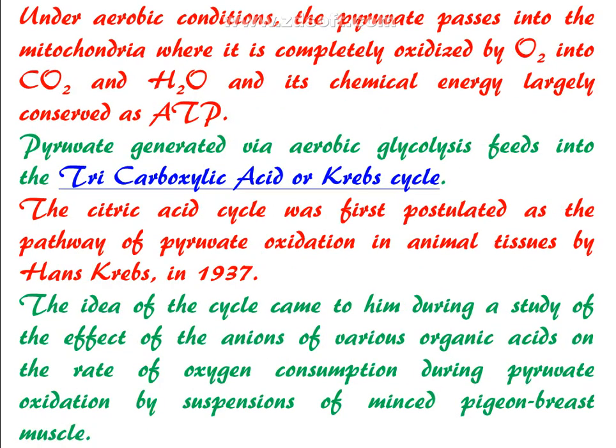In aerobic conditions, pyruvate enters into the mitochondria where complete oxidation takes place. It is oxidized by oxygen into carbon dioxide and water, and whatever chemical energy is liberated is conserved in the form of ATP.